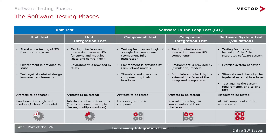When we talk about software testing, we typically talk about two categories: unit testing and software-in-the-loop testing. For unit testing, the control of the software under test is done by a test tool or test framework. The test tool or test framework is responsible for setting up the test, calling the functions, and verifying the results at the end of the test. For SIL testing, the software under test runs autonomously, and the input and output data is controlled through a functional interface.